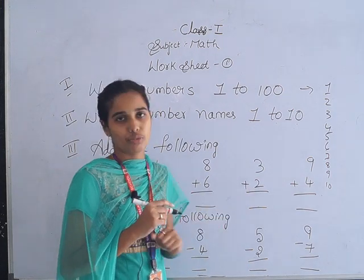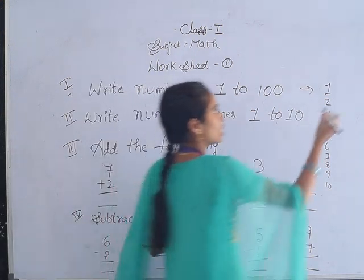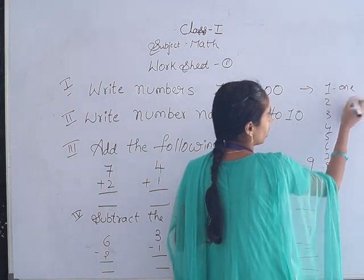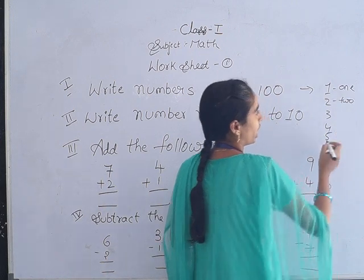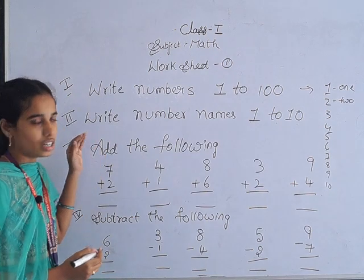That means O-N-E for one, T-W-O for two - like this you have to write in your book. You already know the first two bits.